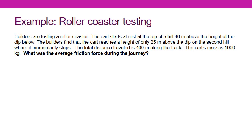We have a roller coaster problem. We're testing the roller coaster — we start at the top of a high hill, let it go down that hill, through a dip, and up the next hill. Instead of going over the hill, it only reaches a height of 25 meters as stated in the problem. I'd like you to pause the video, work on setting up the problem, draw your picture, and assign variables relevant to the problem.